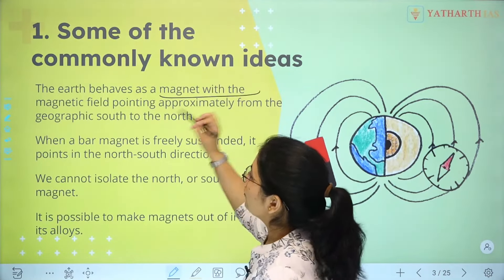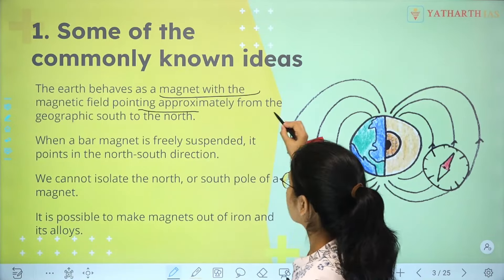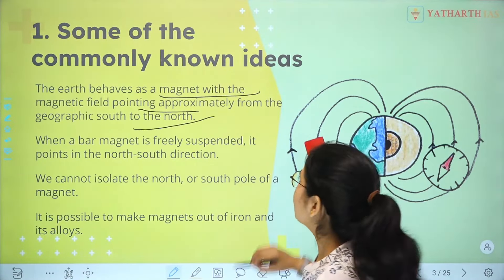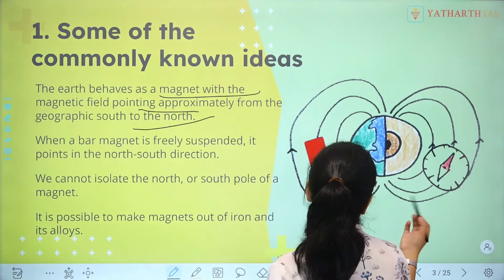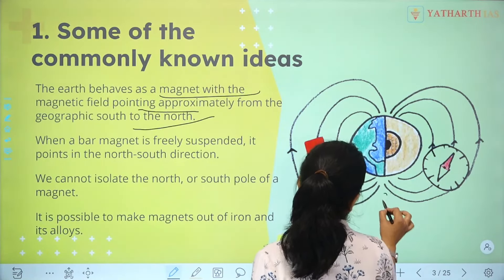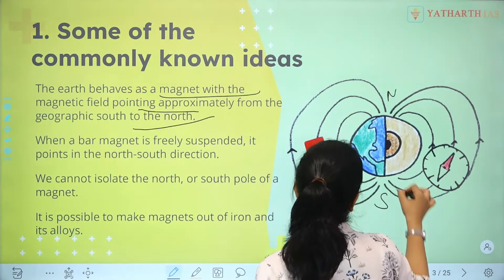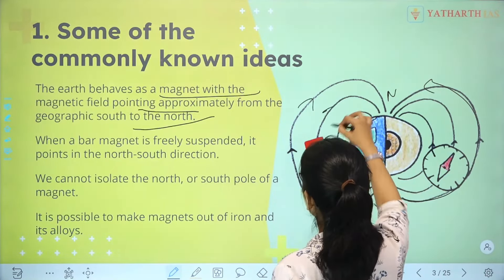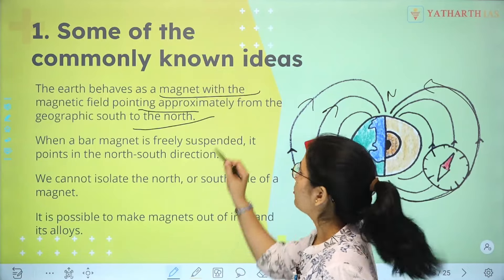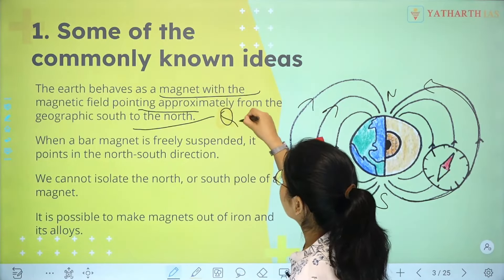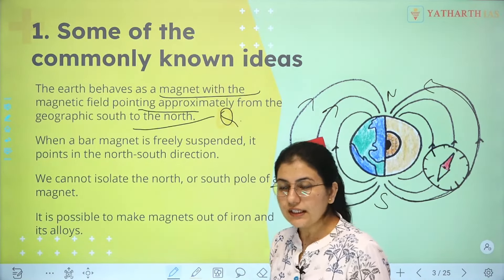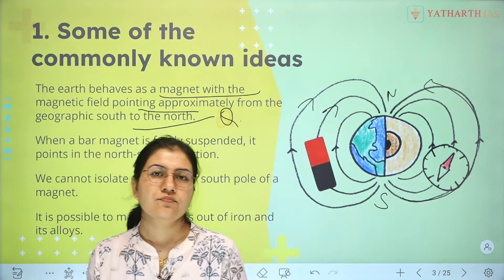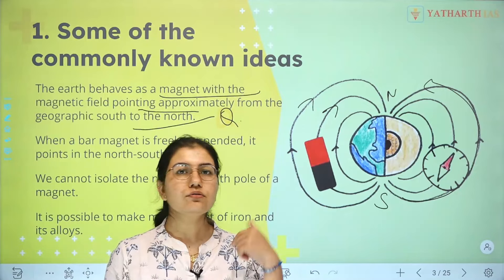First basic idea: Earth behaves like a magnet, with the magnetic field pointing approximately from the geographic south to north. The direction of the magnetic field is from south to north.